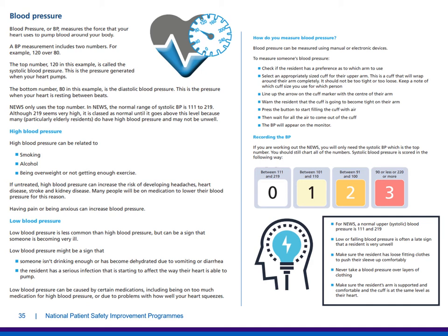To summarise: for NEWS, a normal upper systolic blood pressure is between 111 and 219. Low or falling blood pressure is often a late sign that a resident is very unwell. Make sure the resident has loose fitting clothes to push their sleeve up comfortably. Never take a blood pressure over layers of clothing, and make sure the resident's arm is supported and comfortable, and the cuff is at the same level as the heart. Again, if you have any concerns, even if the blood pressure score is 0, still raise those concerns with an appropriate person.